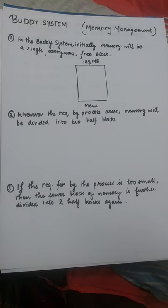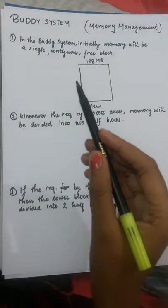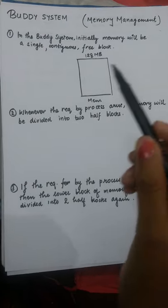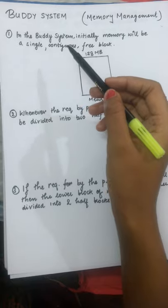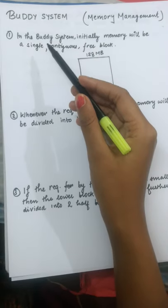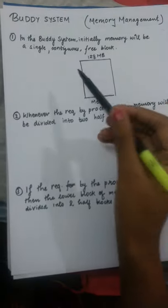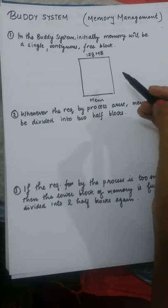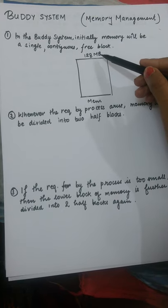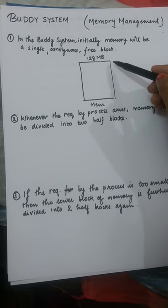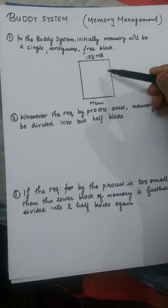Welcome to Rapid Revision for computer science students. In this lecture, we will be studying the buddy system in memory management. The first point says that in the buddy system, initially memory will be a single contiguous free block. Suppose we have a memory of 128 MB — it will be a single contiguous free block.